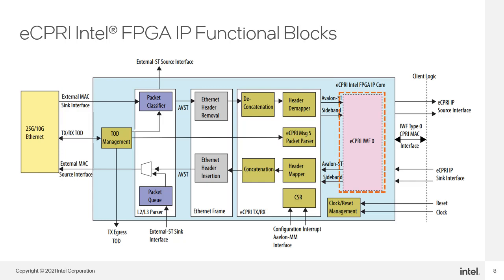Starting from the FPGA fabric side, highlighted now is the eCPRI IWF Type 0 block. Like we learned in the Getting Started training, it is there to bridge between CPRI IP protocol and the eCPRI IP logic behind it. It is only instantiated in the IP when IWF Type 0 support is enabled. To its right, you can see the interface available for connecting to the CPRI MAC.